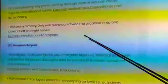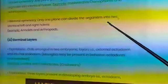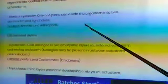Bilateral symmetry: only one plane can divide the organism into two identical left and right halves. Examples: annelids and arthropods.